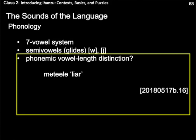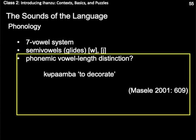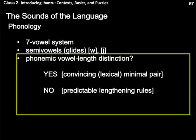Similarly, vowels that seem long appear to have been lengthened by predictable phonetic operations. Take the ee vowel of muteele, meaning 'liar'. The vowel is probably short underlyingly, but has been lengthened before the consonant L. Whether there is more to this rule, especially in terms of whether this can be any L or not, is an open question. Similarly, the form kupamba, meaning 'to decorate', is written in Masele's 2001 word list with a long vowel, but this seems to be the product of a predictable phonetic process in which a vowel is lengthened before a pre-nasalized consonant. To conclude: if a set of phonemic long vowels should be proposed for Ihanzu, I would want to see a convincing lexical minimal pair; if not, I would like to see a comprehensive list of predictable phonetic lengthening rules.